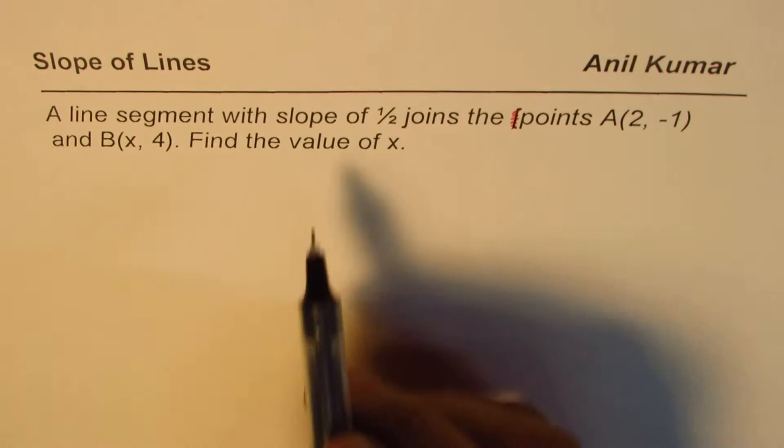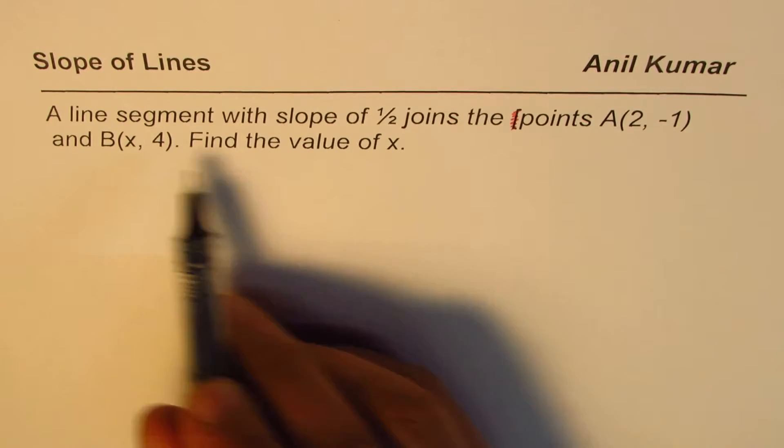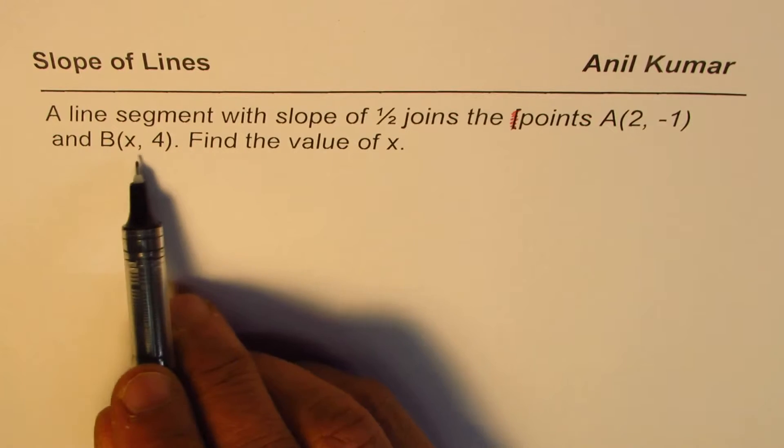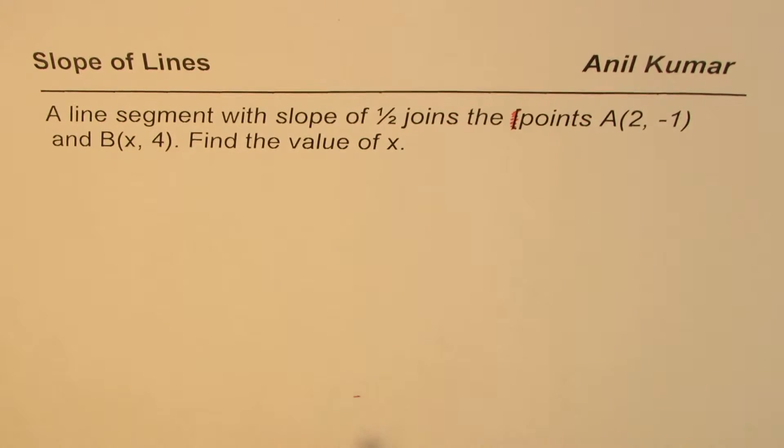So basically, we have a line segment AB whose points are given to us and slope is given to us. In point B, we are given x and 4. We need to find the value of x.